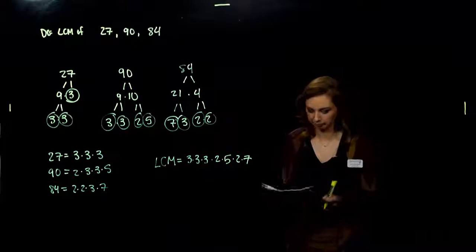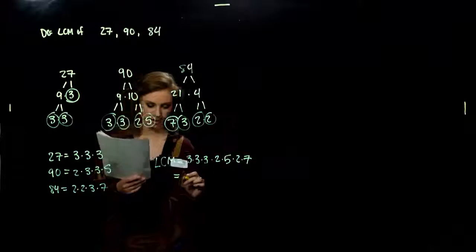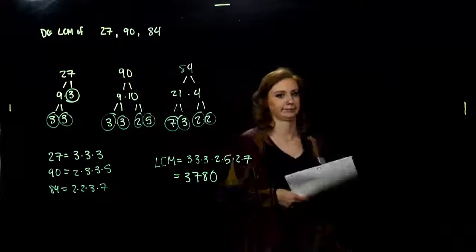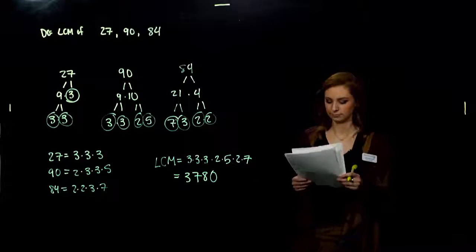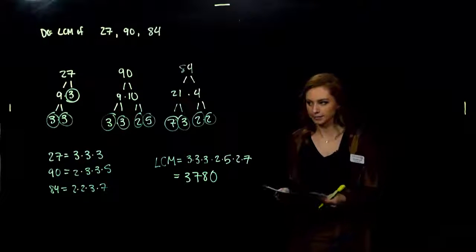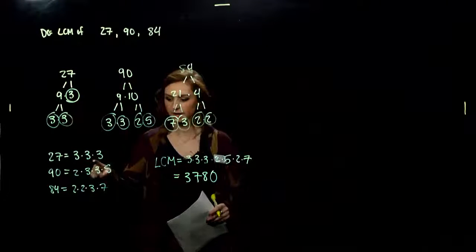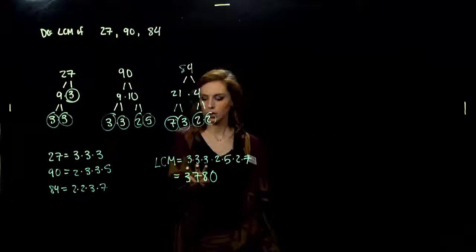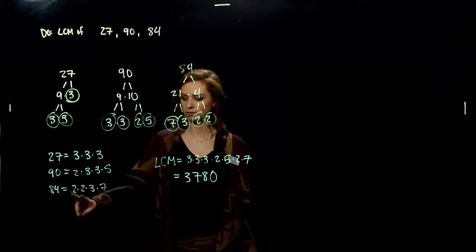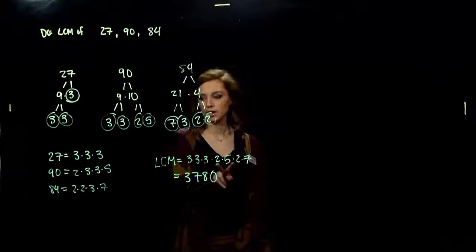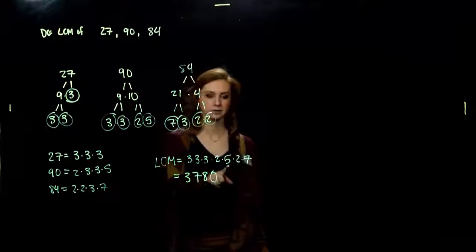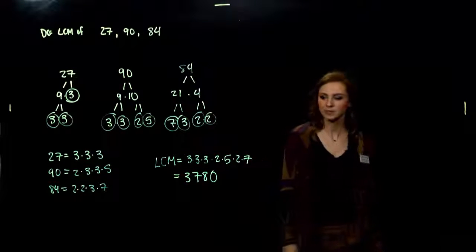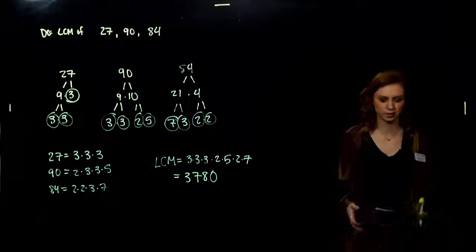So we end up with a really big number: 3,780. Could you imagine writing out multiples until you got to 3,780? No thanks. Using the book's method alternatively: the greatest number of times 3 appears is 3; the greatest for 2 is 2; for 5 it's once; for 7 it's once. Either method works — I just encourage you to use the building method, because it will help you later on.